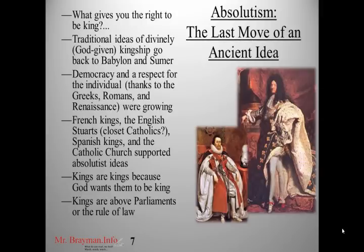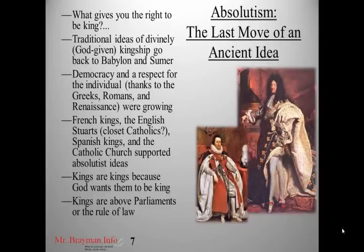Starting in the Renaissance, democracy began to enter European ideas, and Europe started to get much more respect for individuals. This became threatening to kings — if more people's opinions matter and people feel they should have a say in government, that's threatening. The answer was absolutism. French kings, the Stuart dynasty, Spanish kings, and the Catholic Church really supported these absolutist ideas of kings being kings because God wants them to be king, and that kings should be above parliaments or the rule of law.